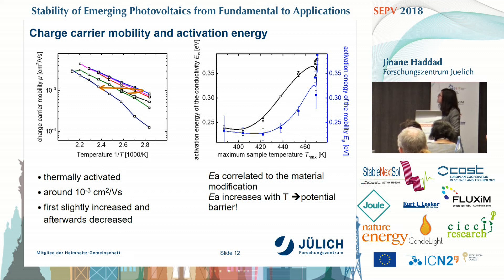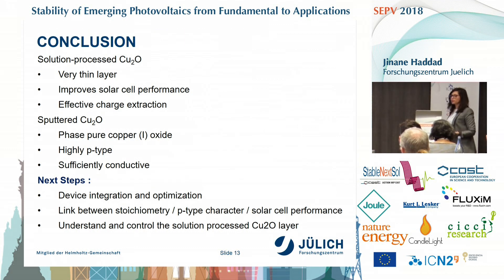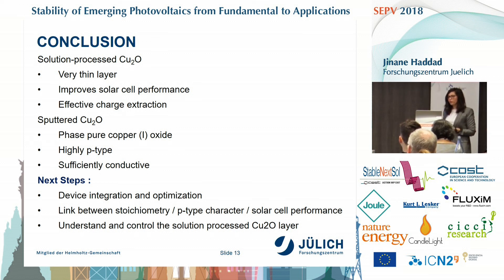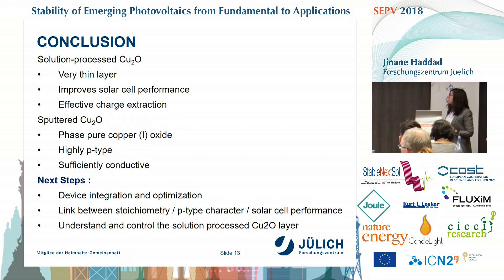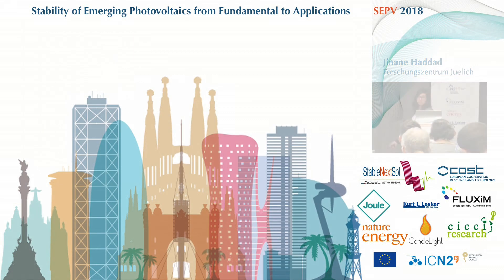To conclude: with the solution-process copper oxide we had a very thin layer but saw a nice increase in solar cell performance and effective charge extraction. For the sputtered layer, we were able to make a relatively pure, highly p-type and sufficiently conductive copper oxide. As next steps, I would like to finalize the solution process work for conclusive results, optimize the integration of the sputtered copper oxide into devices, and understand the link between stoichiometry or oxide phase, the p-type character, and the performance of the solar cell. Thank you for your attention.